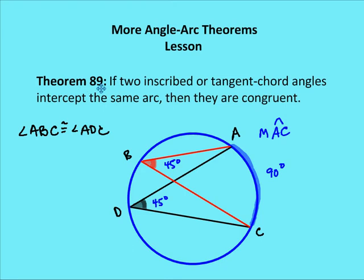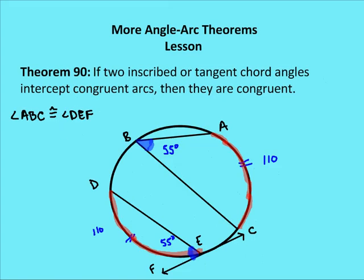Theorem 89: If two inscribed or tangent-chord angles intercept the same arc, then they're congruent. Here I have the same arc AC, and I know that angles B and D are congruent because they intercept the same arc, and inscribed angles are going to be half the measure of their intercepted arc.